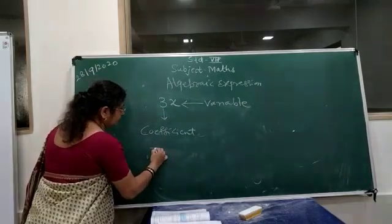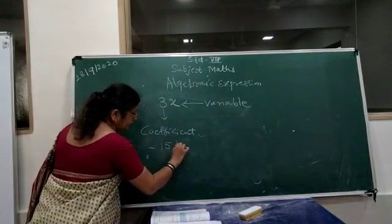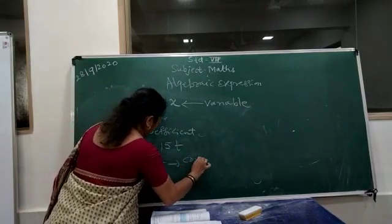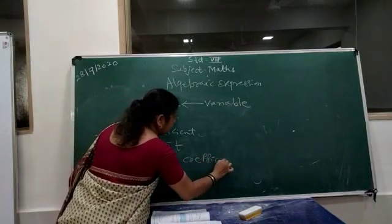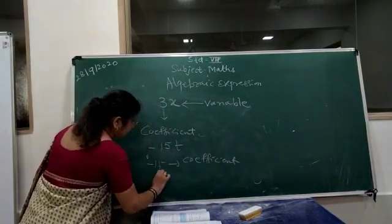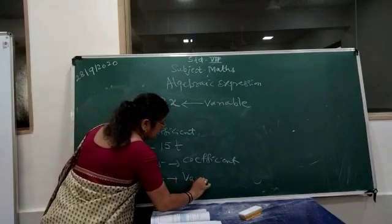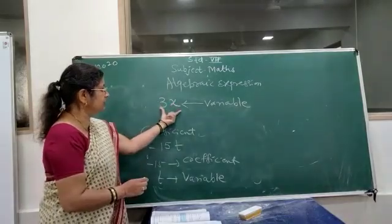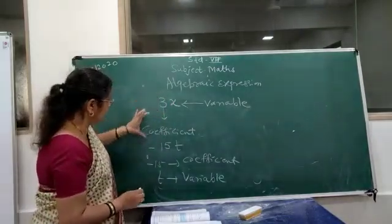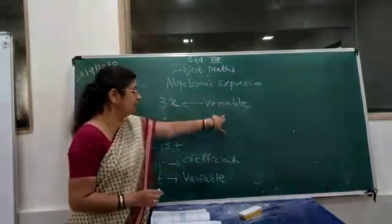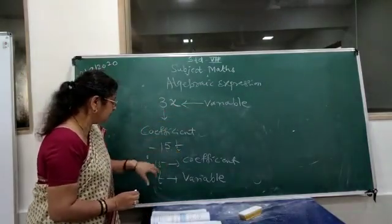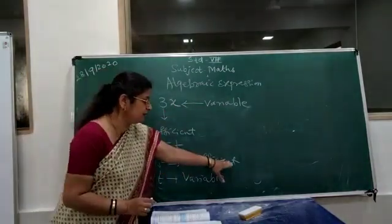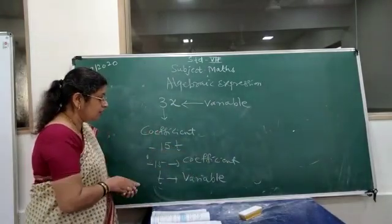For example, in minus 15T: minus 15 is the coefficient and T is the variable. This is very important. Remember: 3X — 3 is the coefficient, X is the variable; minus 15T — minus 15 is the coefficient, T is the variable.